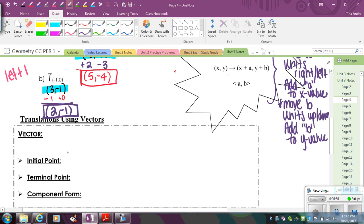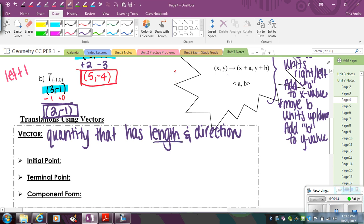So first thing you have to know is what does a vector mean? So a vector is a quantity that has length and direction. So if you remember what I said about a translation, you're always going to be going a fixed distance, so a specified length, and in a given direction. So when I say left 1, up or down 0, I'm telling you which direction to go, and I'm telling you how many to go in that direction. So that's what a vector is doing.